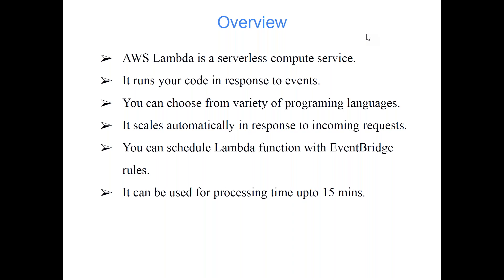Behind the scenes, AWS will launch a small EC2 instance temporarily — not permanently — to run your code in response to events. Suppose you have a Lambda function triggered based on events. For example, you have an S3 bucket and some other team is putting CSV files there, and you want to process those files as soon as that event occurs. Or take another scenario: you've defined a Lambda function with an event defined as deletion of some object from S3, because in a normal scenario you're not expecting anyone to delete from your bucket.